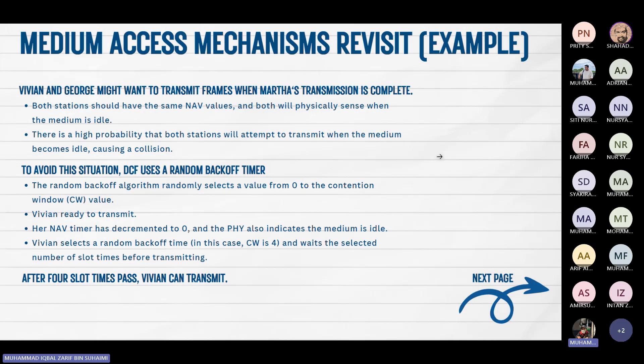When Vivian is ready to transmit, her NAV timer has decremented to zero and the physical layer indicates the medium is idle. Vivian selects a random backoff time; in this case CW is four, and with the selected number of slot times, after four slot times pass, Vivian can transmit.